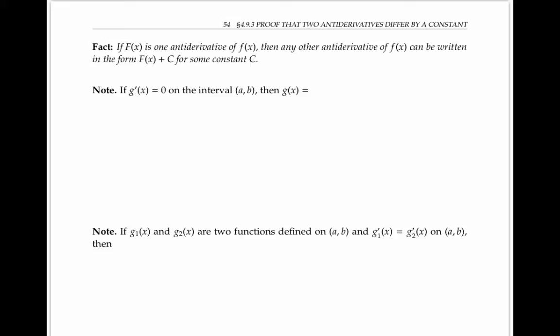To prove this fact, let's first note that if the derivative of a function g'(x) is equal to zero on an interval, then the original function g(x) must equal C for some constant C.